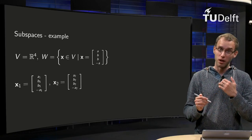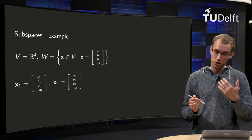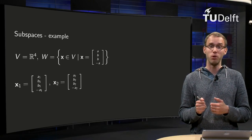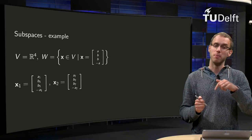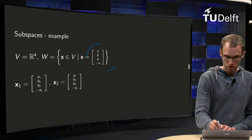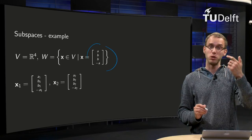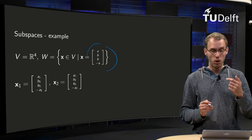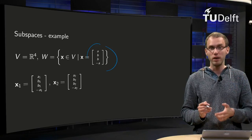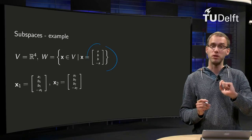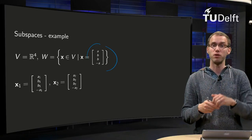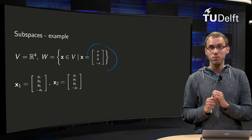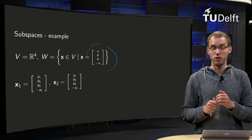We will start with vector space R4 and W, a subset of R4, where the vectors are of the form (A, B, B, -A). For example, the vector (1, 2, 2, -1) is in W, but the vector (1, 2, 2, 1) is not. The second and third components have to be the same, and the fourth component has to be the negative of the first. So let us see whether W is a subspace of R4.